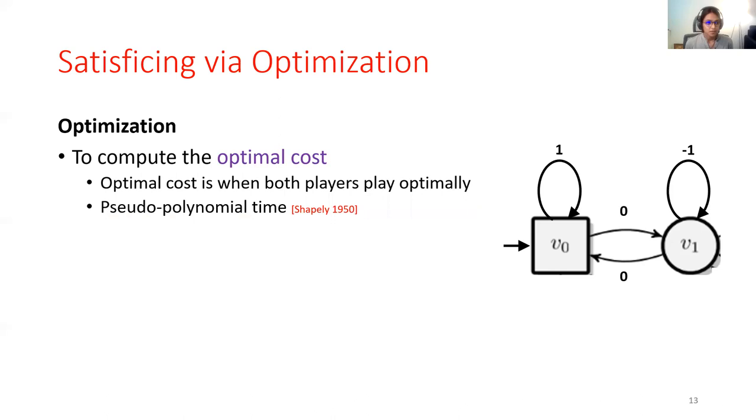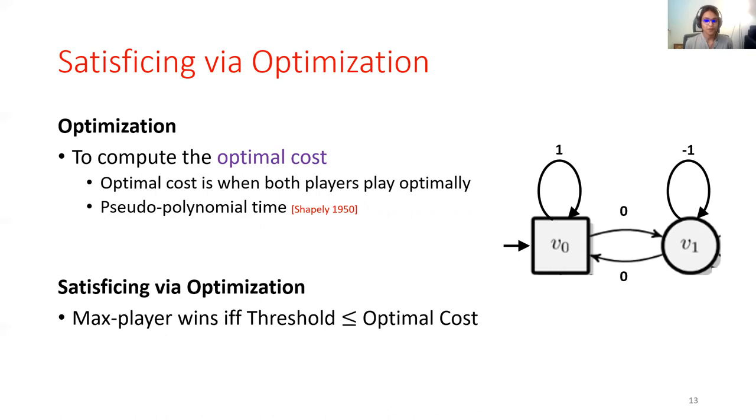Now, the algorithm for satisficing is very simple. The motto is, in fact, if you can optimize, you can satisfice. And thus, simply comparing the optimal cost to the threshold value gives you a necessary and sufficient condition for the max player to win, and that completes the algorithm. Really simple.